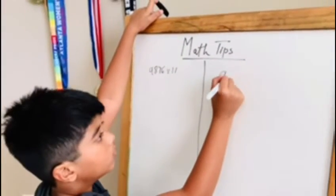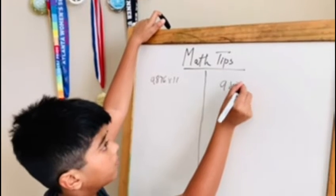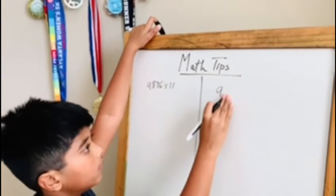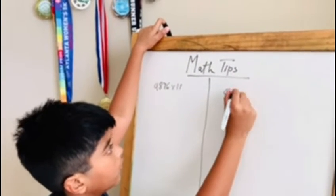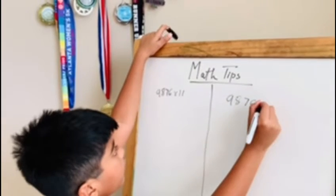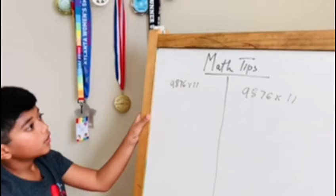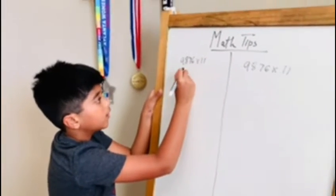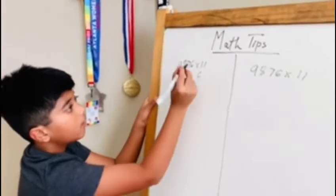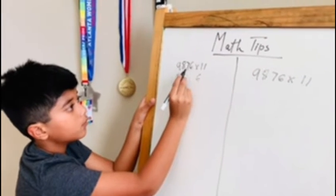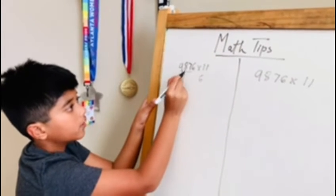This is the same thing, it's just that you can't do mental math as easily for this, so you have to use paper. What you do, as usual, is put the first and last digits. Then you add these two numbers, these two numbers, and these two.